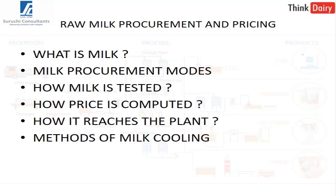In raw milk procurement and pricing, we consider how to procure milk from dairy farmers. Before that, you need to understand what milk is and its various components. We then talk about different kinds of milk procurement modes, how milk is tested against adulteration, how the price of milk is determined, how it reaches the plant, and methods for milk cooling before it arrives.